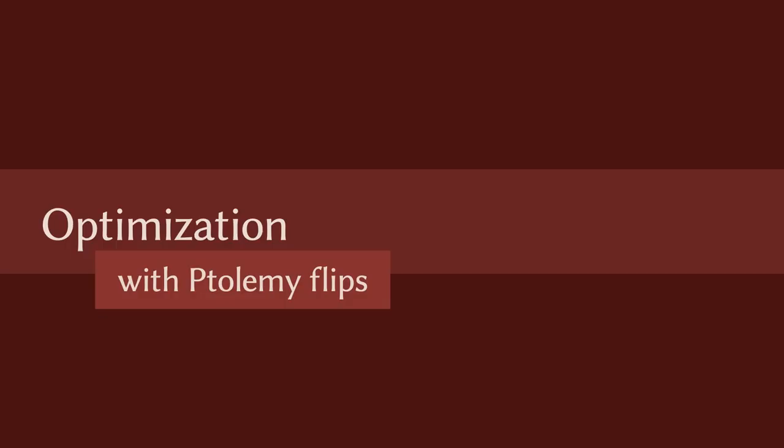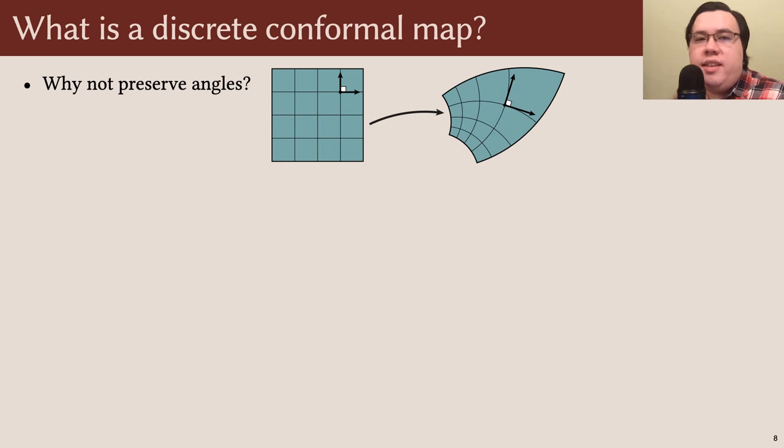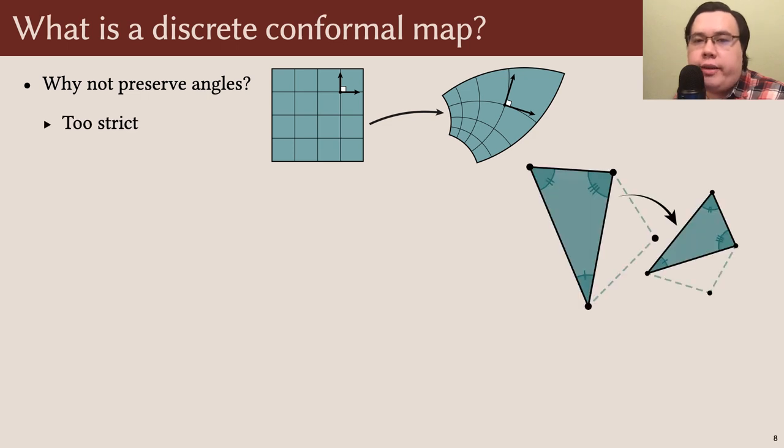I'll start by talking about optimization with Ptolemy flips, but before diving into the details, I first need to say what exactly I mean by discrete conformal map. In the smooth setting, conformal maps are often described as angle-preserving, and you could easily use this same definition on triangle meshes. However, this notion is far too strict. The only angle-preserving transformations that you can apply to a triangle mesh are global scalings and rigid motions.